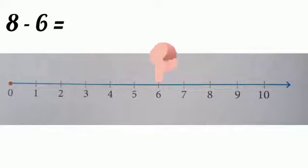See 1, 2, 3, 4, 5, 6. We move 6 steps back because we should subtract 6 or our question is 8 minus 6. After moving 6 steps back from 8, where did we reach? Yes, we reached 2. So, 8 minus 6 is equal to 2.